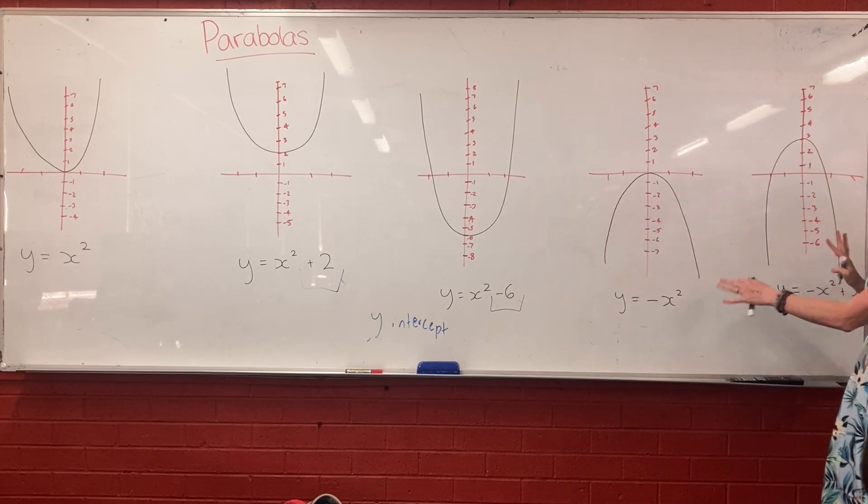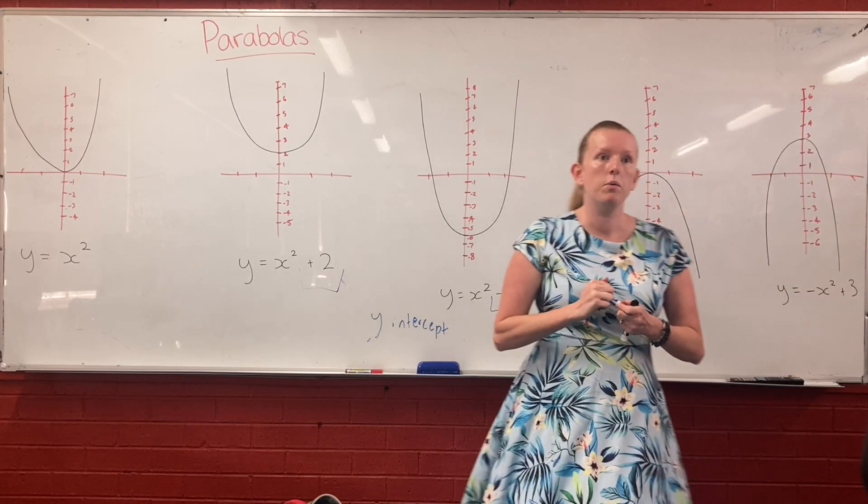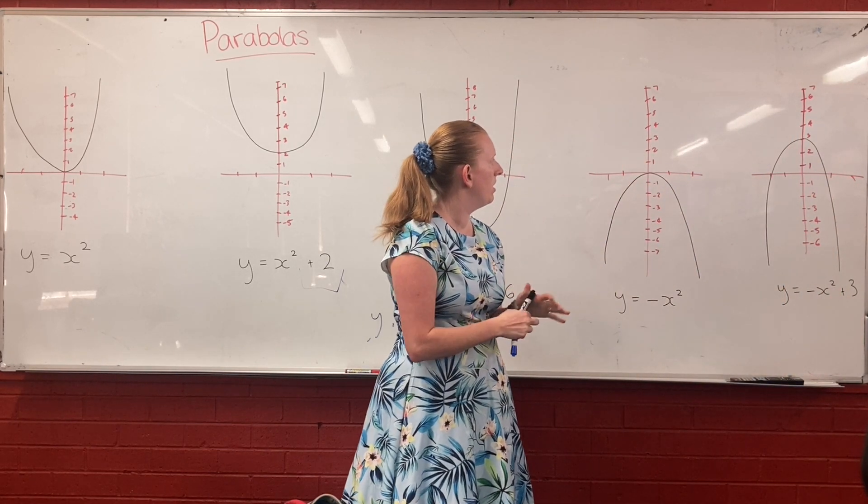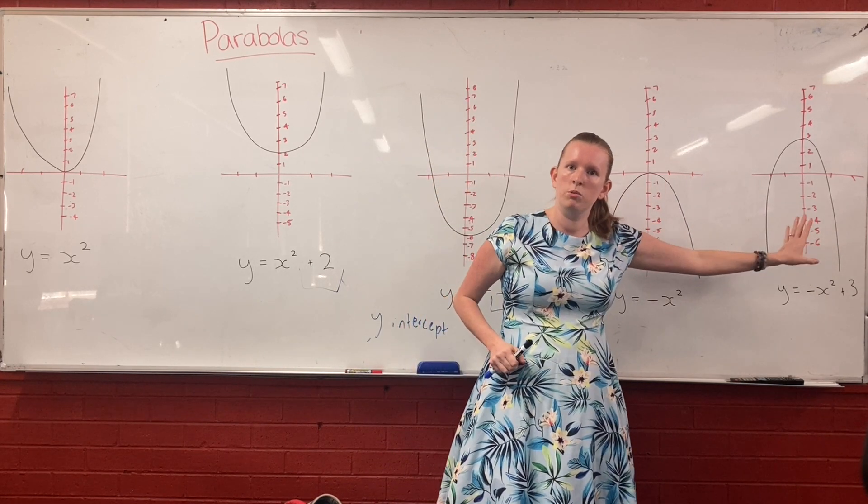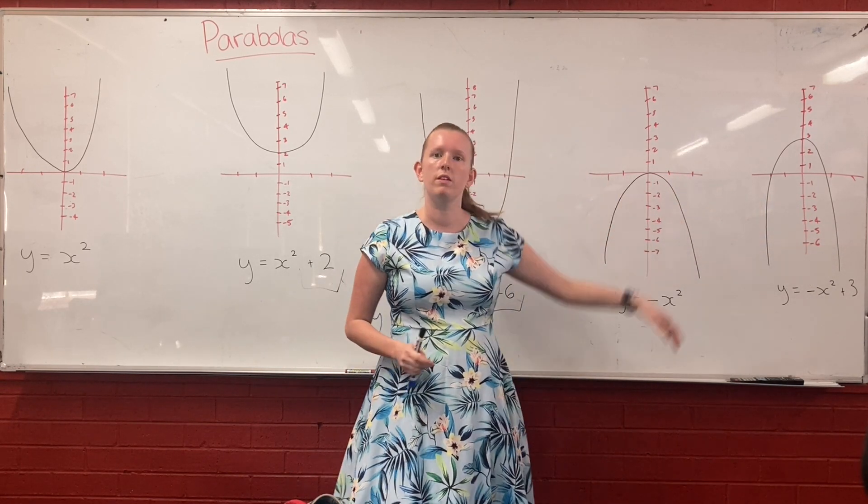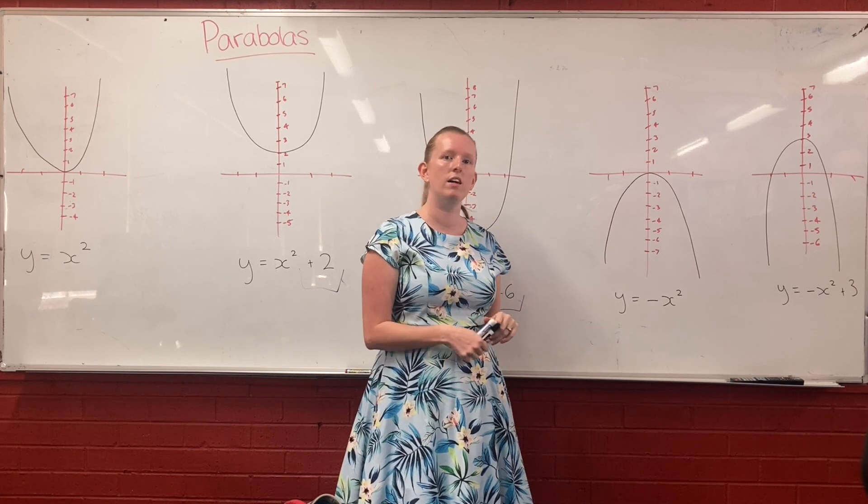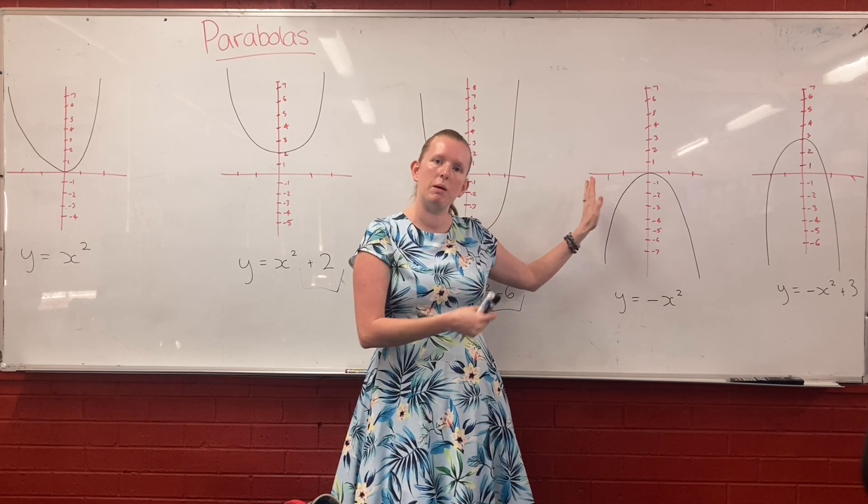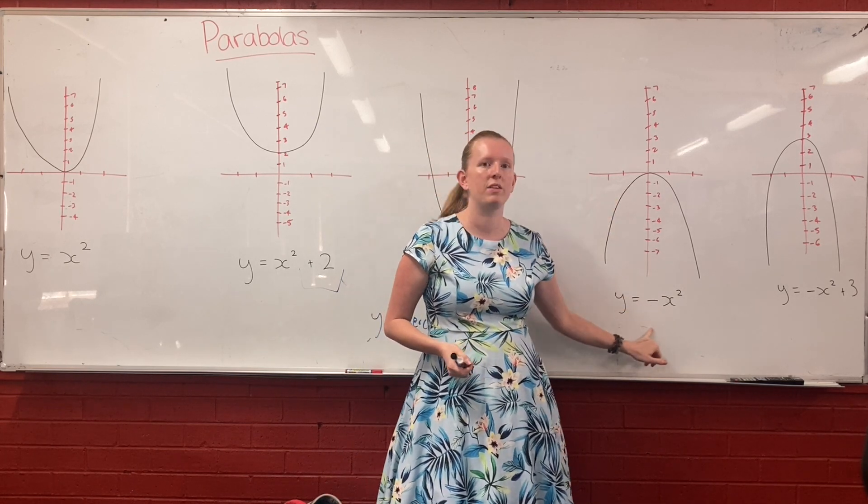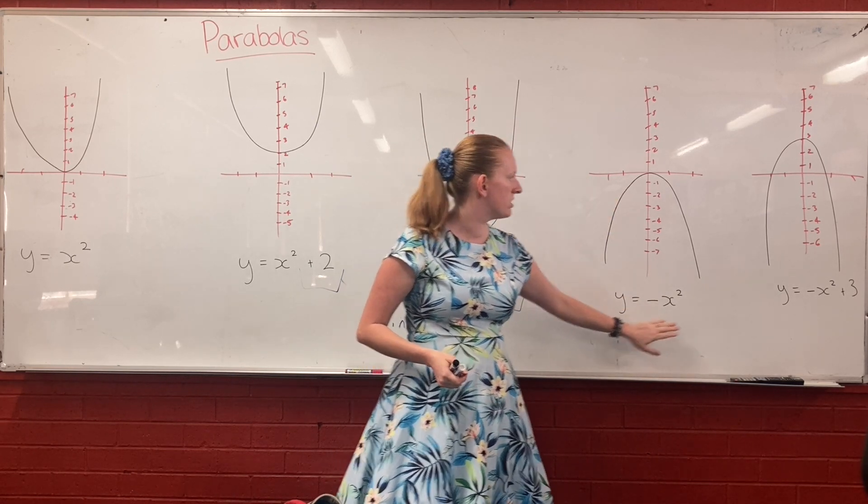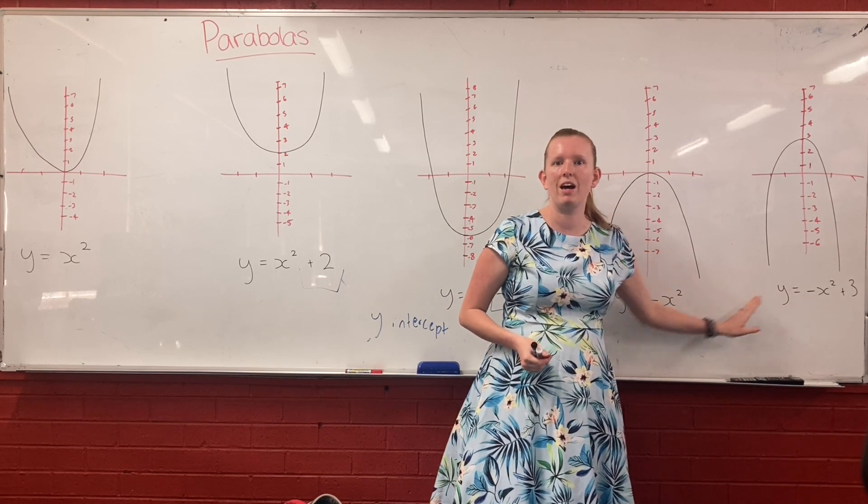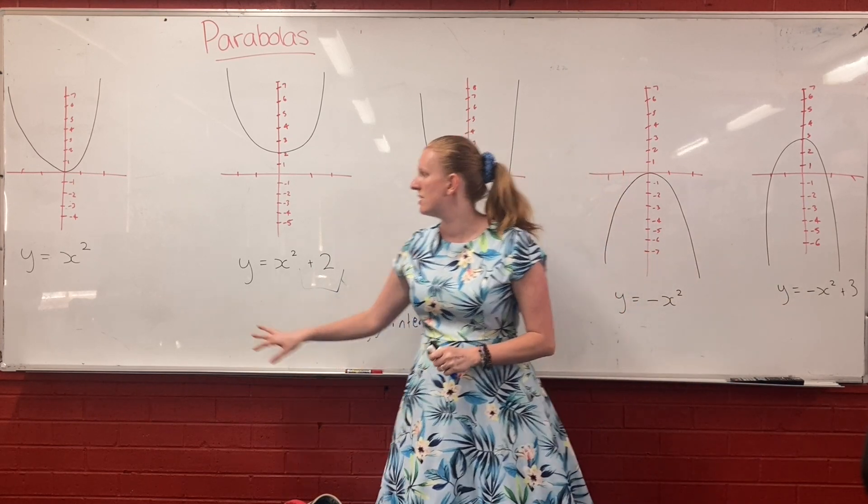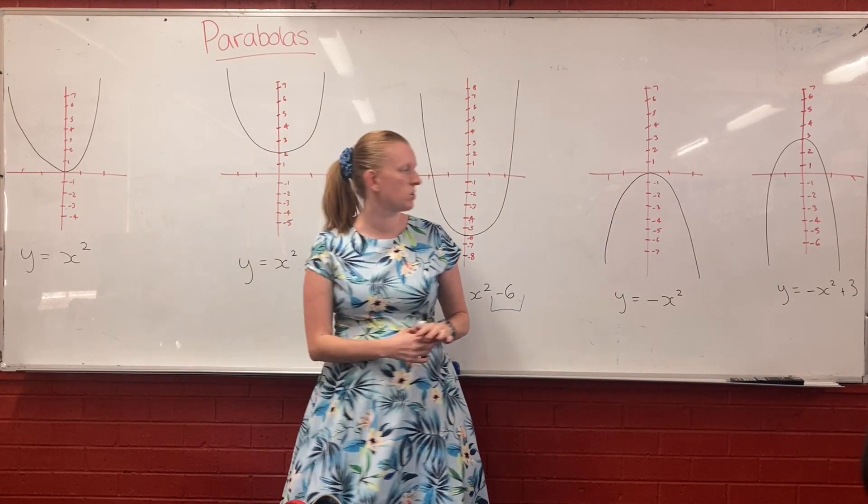So these two over here are a little bit different because not only has this one here been moved, but they've also been flipped upside down. So they're concave down instead of concave up like these ones here. And the way that you get a parabola to flip upside down is by putting a negative in front of the x squared. So you'll notice that these two equations both have negative x squared instead of just positive x squared.